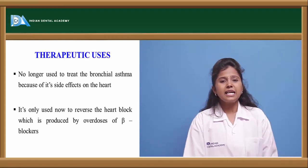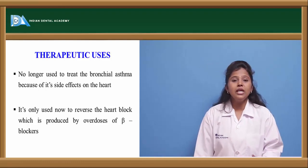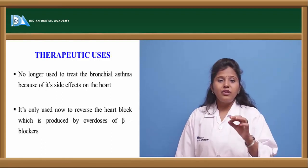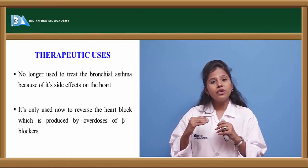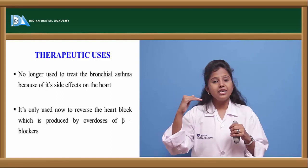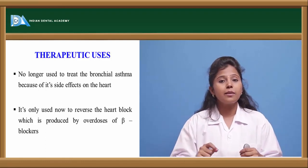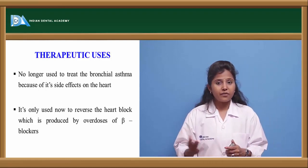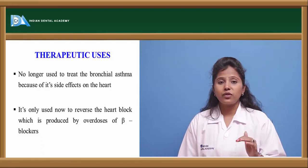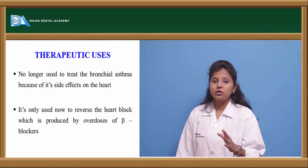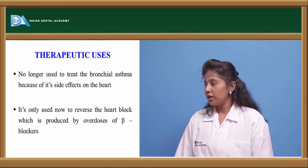Isoprenaline was previously used but is not much marketed now because of side effects. It has a narrow therapeutic index — even a microgram change in dose causes either no effect or adverse effects. Side effects include bronchial spasm. Due to its dose-dependent side effects and narrow therapeutic index, it is no longer commonly recommended.